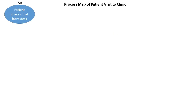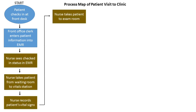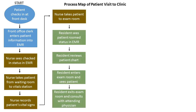Our process starts with the patient checking in at the front desk, where the clerk enters the patient's information into the electronic medical record (EMR) system. The nurse notes from the EMR that the patient has checked in, gets the patient and her mother from the waiting room, and takes them to the vital signs station. There the nurse records the patient's vital signs and then walks with the family to the examination room. Next, the medical trainee or resident sees in the EMR that the patient is now in the exam room, reviews the patient's chart, enters the exam room, and sees the patient. The resident then exits the exam room to consult with the attending physician.